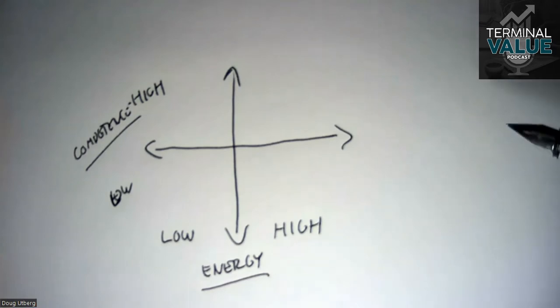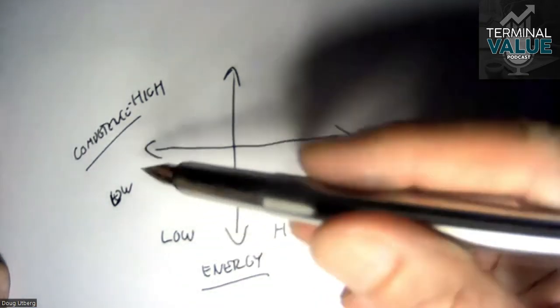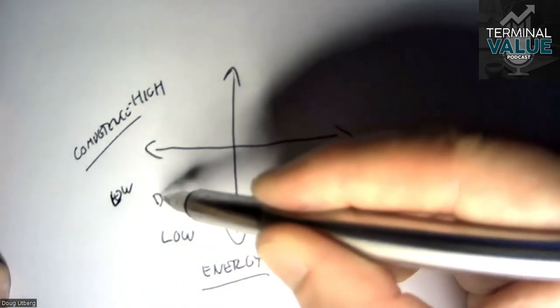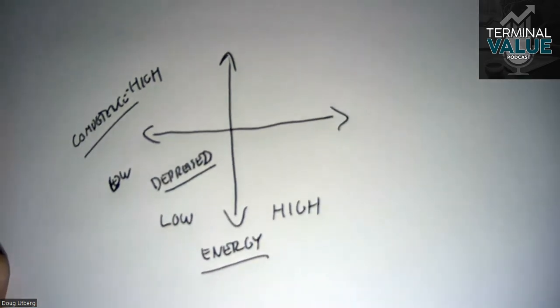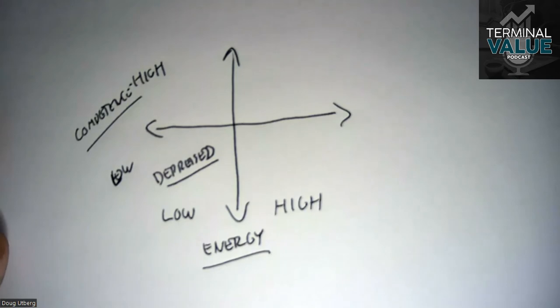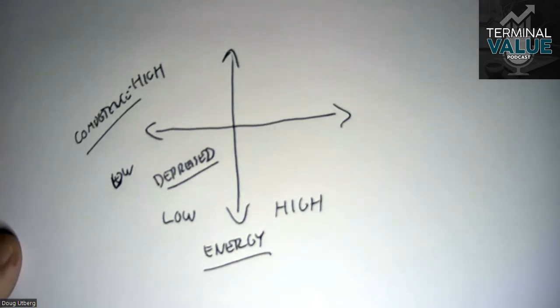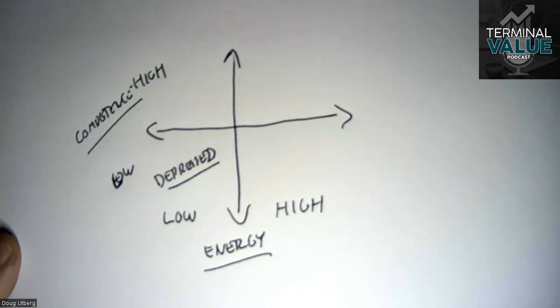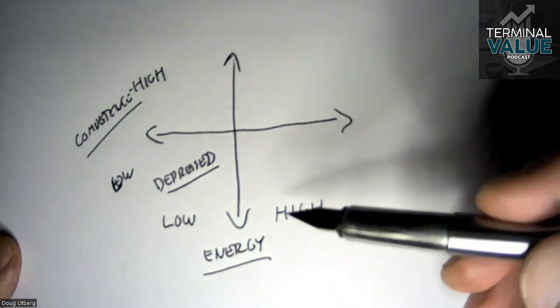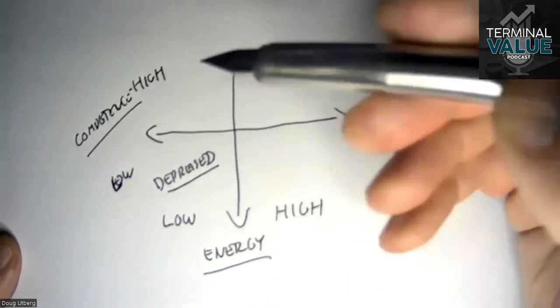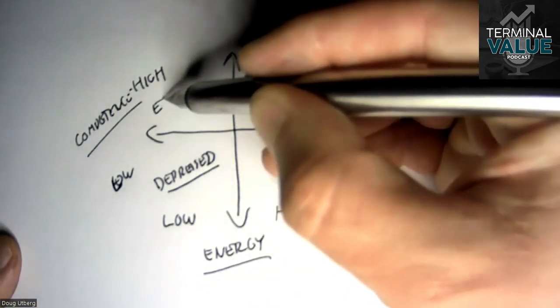Whenever we have low energy and low competence, that's usually where we're kind of depressed. Generally speaking, this is not an amazing zone to be in and most of us don't like being there. The next quadrant is where we have high competence but low energy. This is what we call the excellence zone, where you do something you're not really enthused about but you're really good at it.